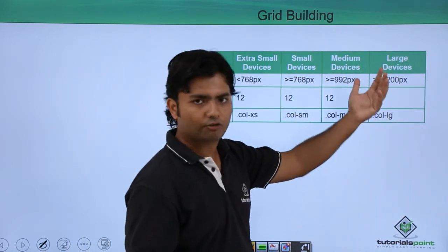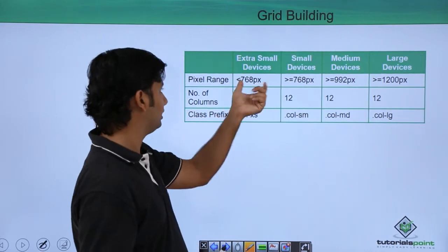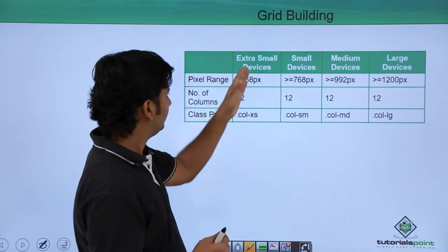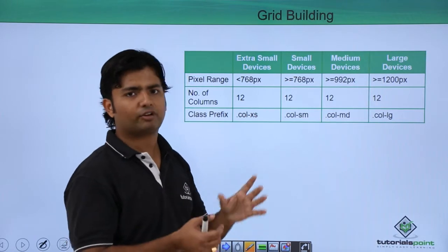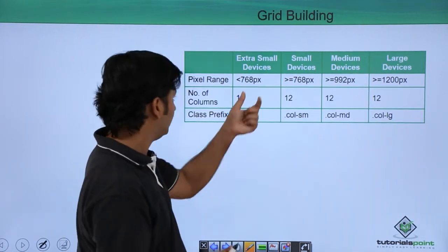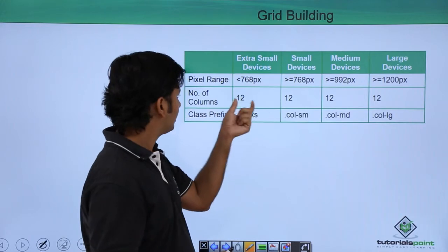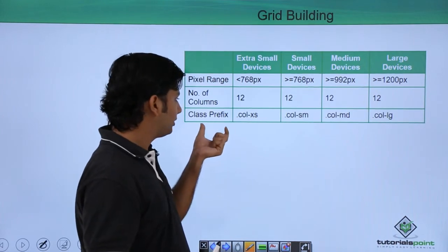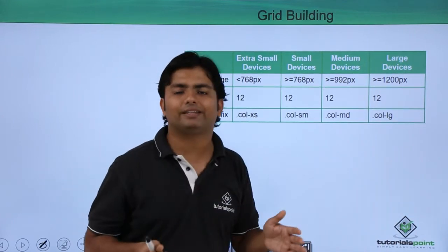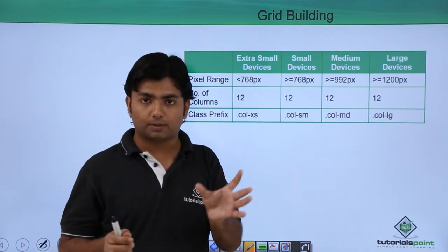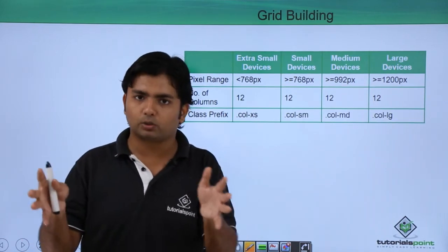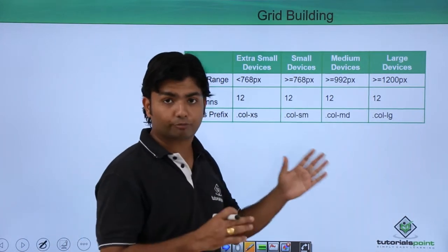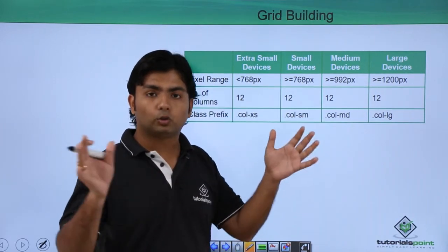If the number of pixels is less than 768, it's considered a mobile device — an extra-small device like a 5 or 5.5-inch mobile screen. The number of columns remains 12 for all screen sizes. Class prefixes are the Bootstrap CSS classes that help you split those 12 columns into different numbers depending on the screen size.